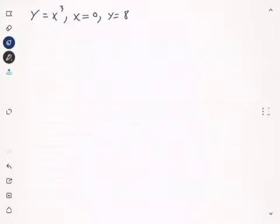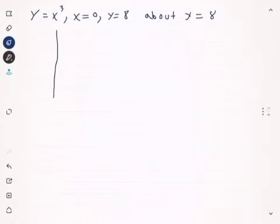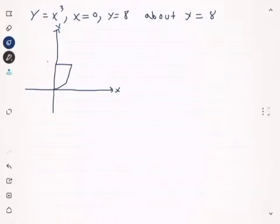Finally, we take the same region — y equals x cubed, x equals zero, y equals eight — but this time we revolve about the line y equals eight. The region looks the same with points (0,0) and (2,8), and y equals eight is the top boundary of the region.